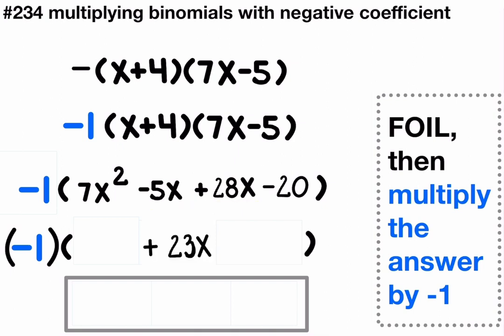Negative 5x and 28x make 23x. Let's bring down the 7x squared and then minus 20.